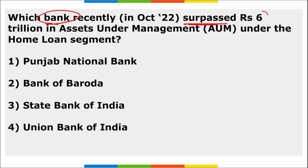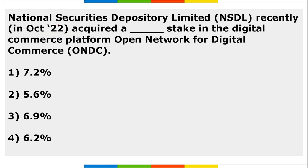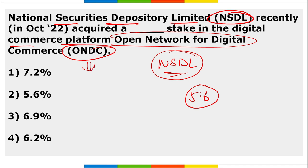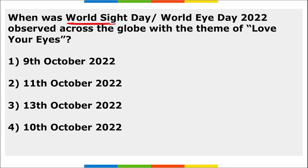State Bank of India recently surpassed ₹6 trillion in assets under management (AUM) under the home loan segment. National Securities Depository Limited (NSDL) acquired a 5.6% stake in ONDC (Open Network for Digital Commerce). The first application listed on the ONDC platform was Paytm Mall.